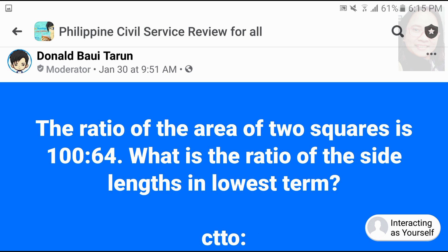The ratio of the area of two squares is 100 is to 64. What is the ratio of the side lengths in lowest term?